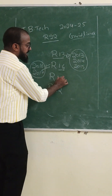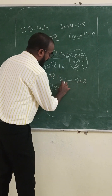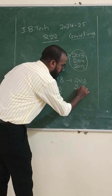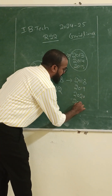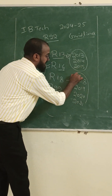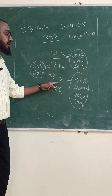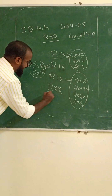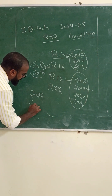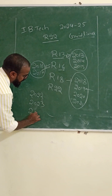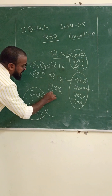R18 means it was introduced in the academic year 2018, and it also covers 2019, 2020, and 2021 joined students. So the students who joined in these four academic years come under R18 regulation. Then R22 means 2022 — that is 2022, 2023, and even the 2024 batch. These three batches come under R22 regulation.